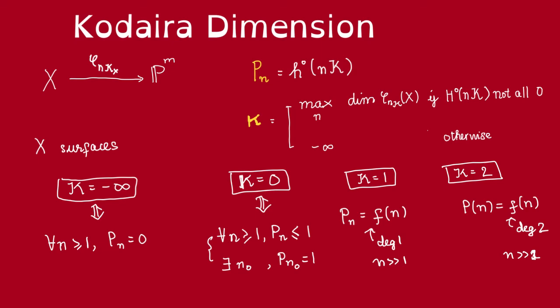Now, finally, for the Kodaira dimension 1 and 2, this Pn are going to grow like polynomials in n, for n sufficiently large. In this case, if Kodaira dimension is 1, it's going to grow like a linear polynomial in n, and in the case of dimension 2, it's going to grow like a quadratic polynomial in n. So, we could say that the Kodaira dimension expresses the asymptotic behaviour of this Pn.